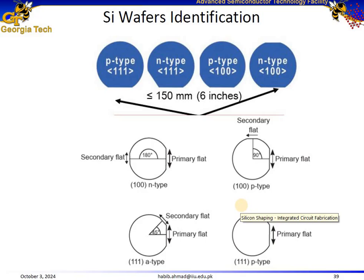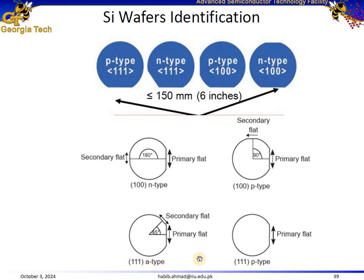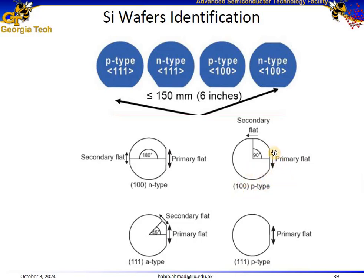We can have different flat configurations. For example, a silicon 100 n-type wafer has a primary flat and a secondary flat located at 180 degrees opposite to the primary flat. Similarly, a silicon 100 p-type wafer has a primary flat and a secondary flat which is located at 90 degrees relative to the primary flat.